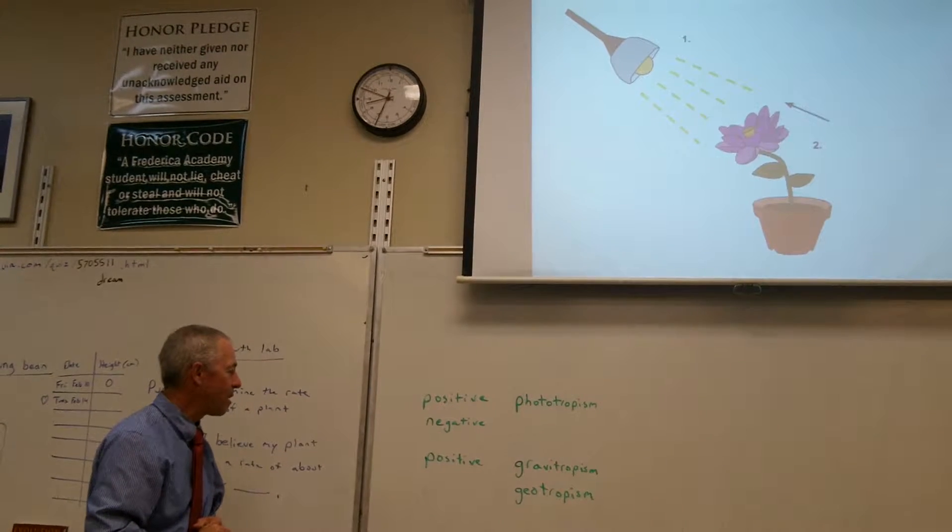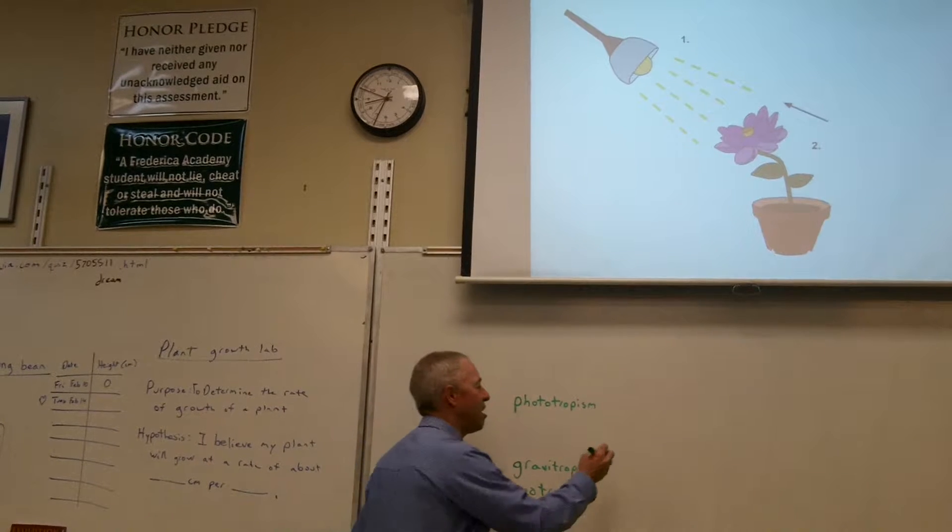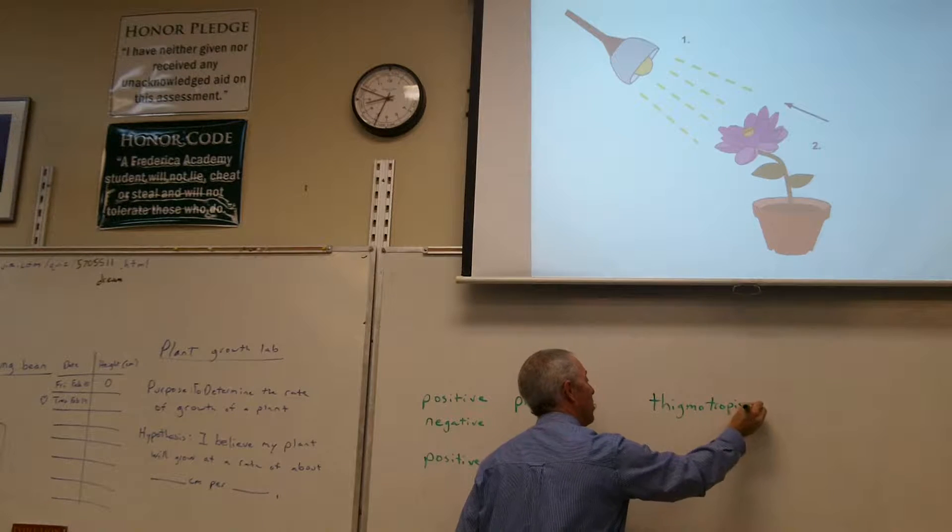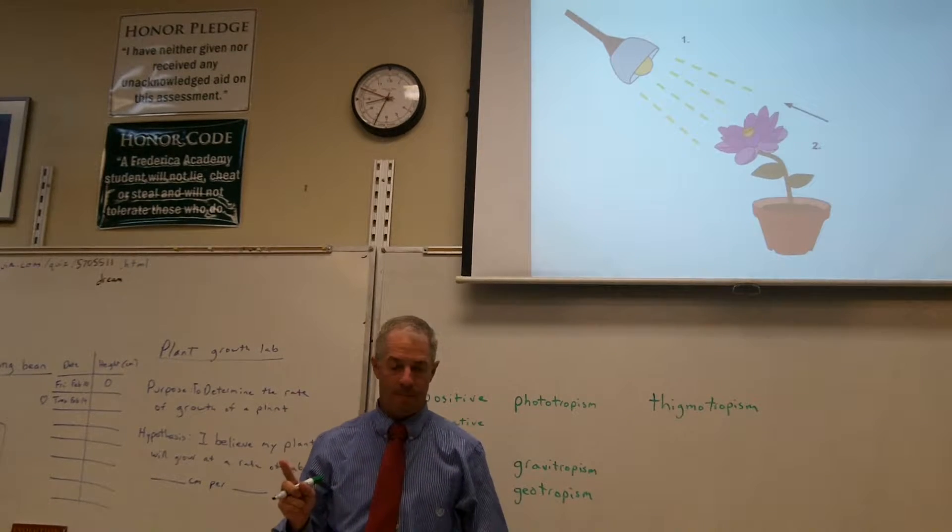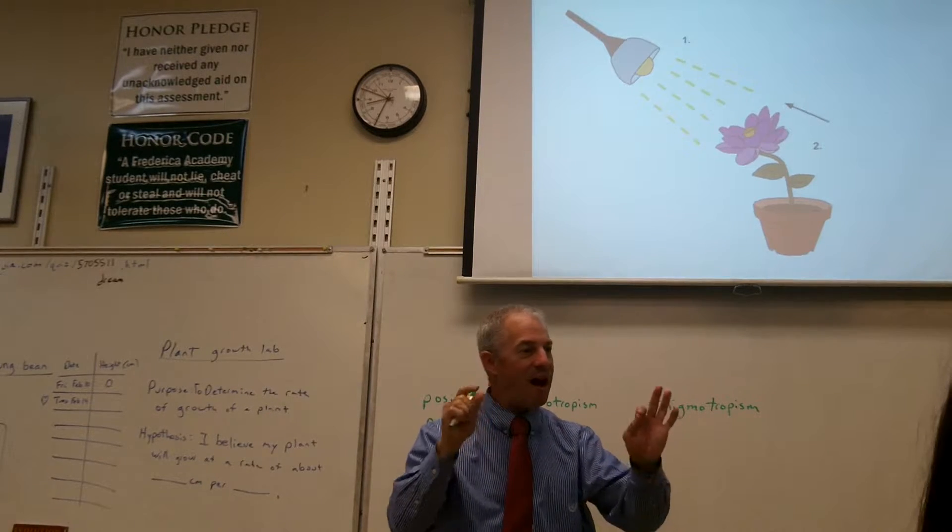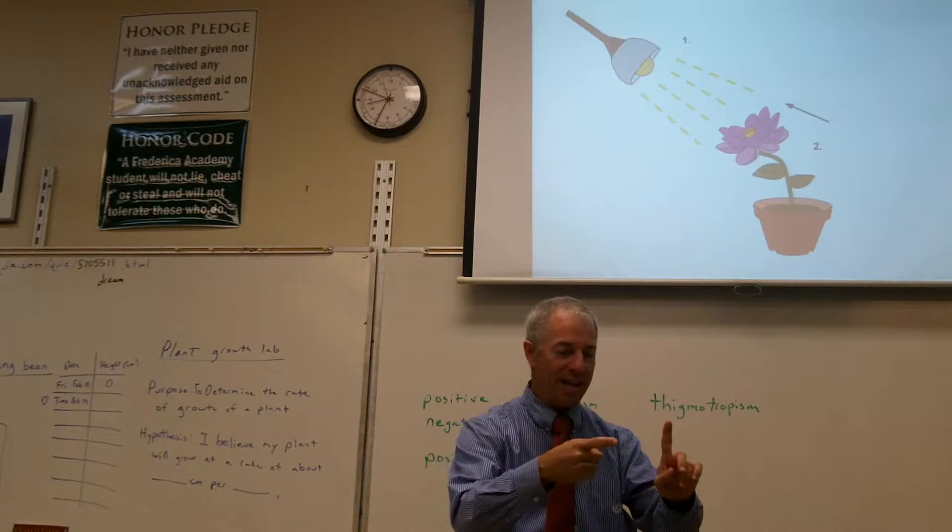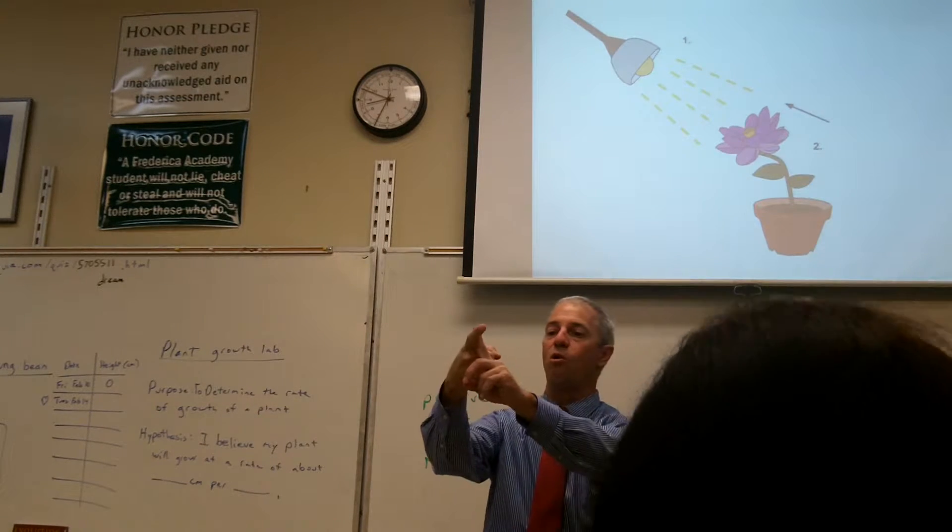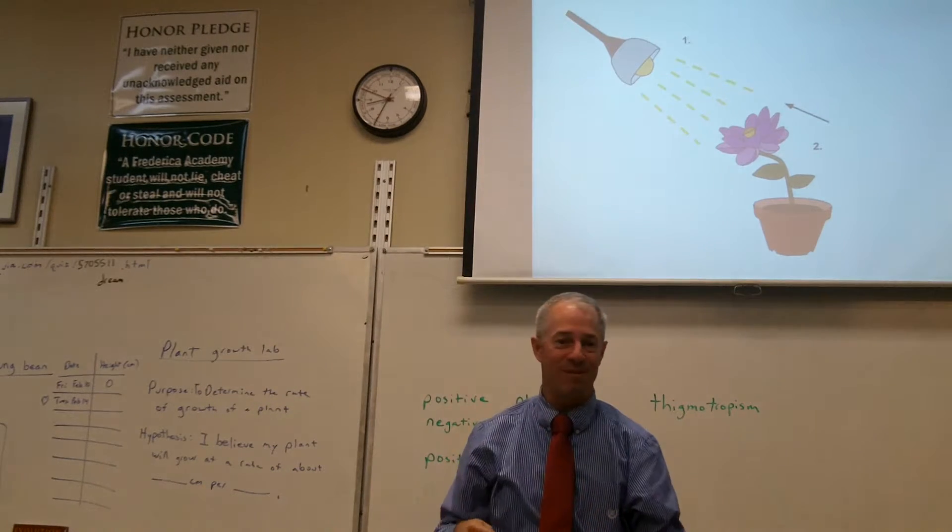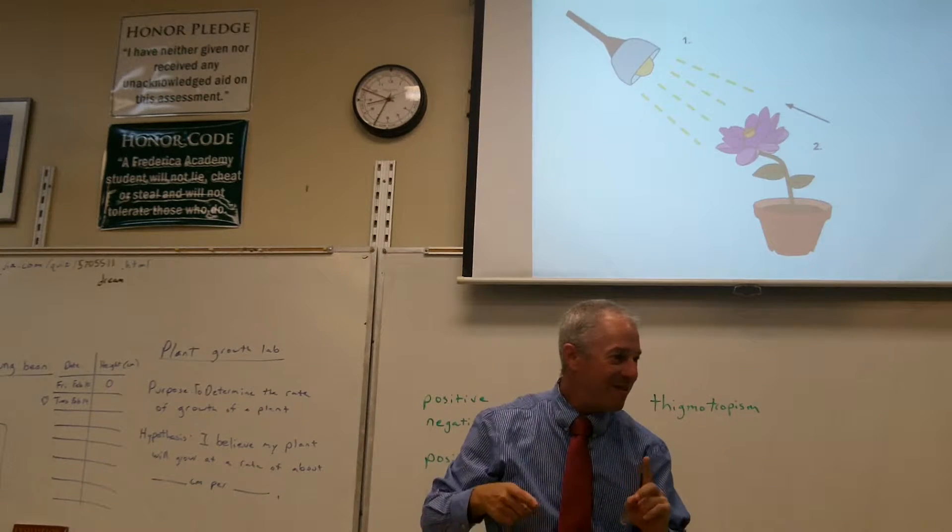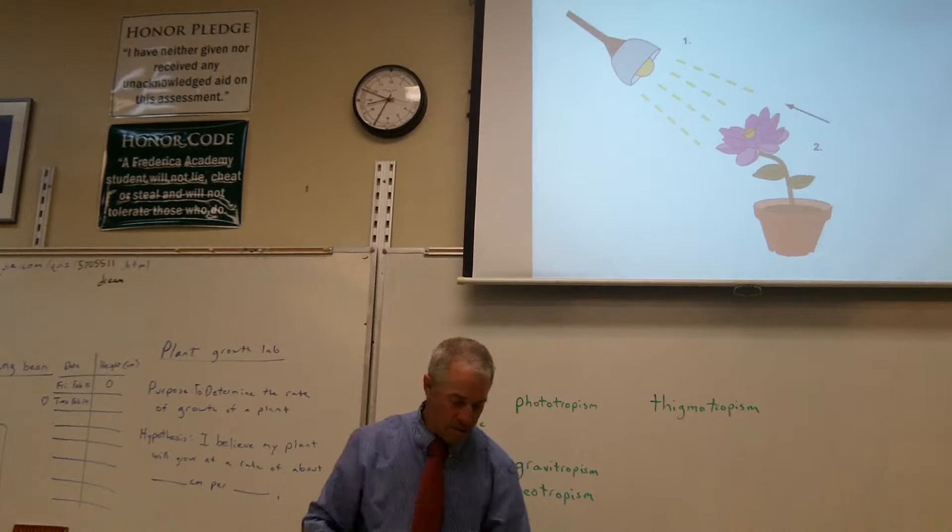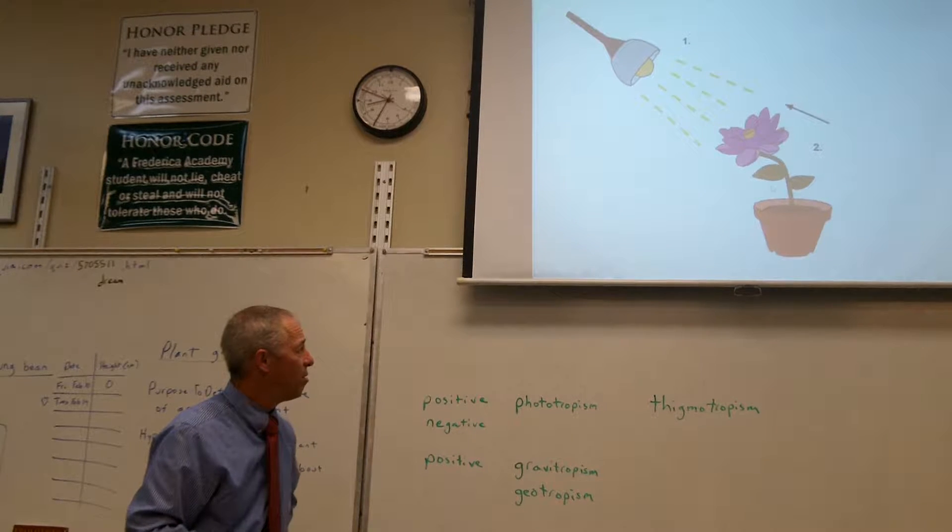And then there's another type of tropism that we need to know. It's called thigmotropism. That's a response to touch. Plants will often move toward something they touch. Vines will especially do this. A vine will creep along and then when it touches something, it will grow toward it. And it will just wrap around it.